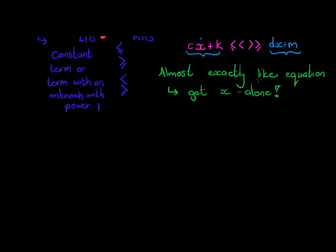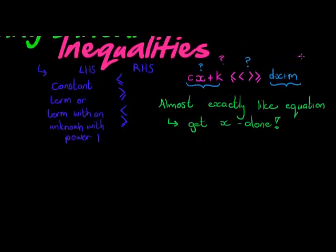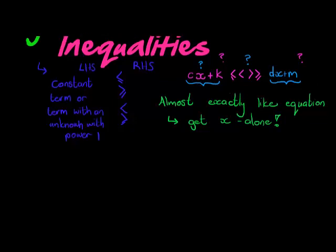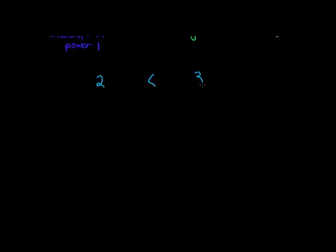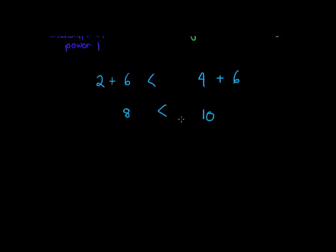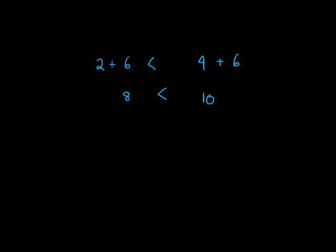I can do anything on this side as long as I do it on the other side as well. There's one little difference, but let me quickly show you. Let's say two is less than four — we know that's true. If I add six to both sides, my answer is eight on the left and ten on the right. Is it still true that eight is smaller than ten? Yes it is. So adding anything to both sides preserves the inequality.